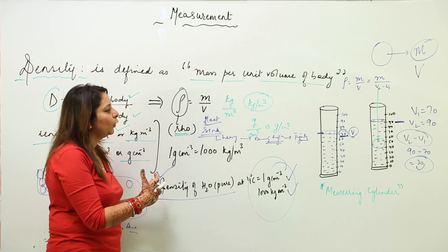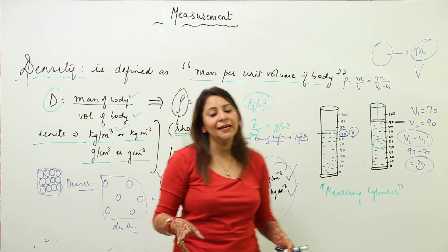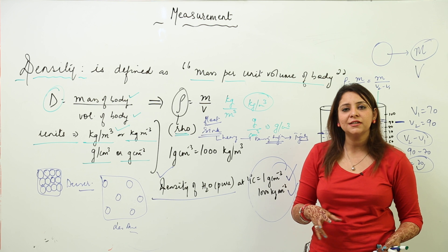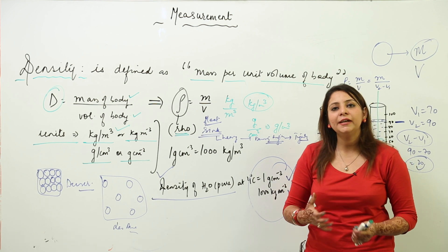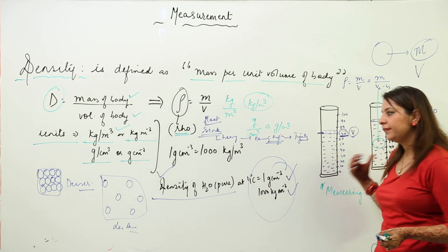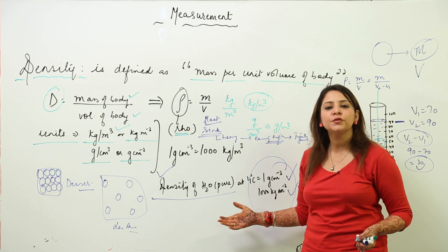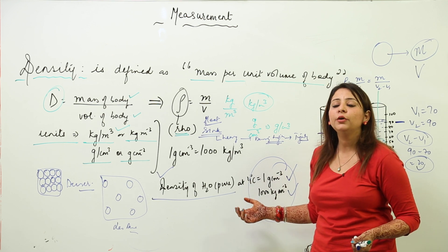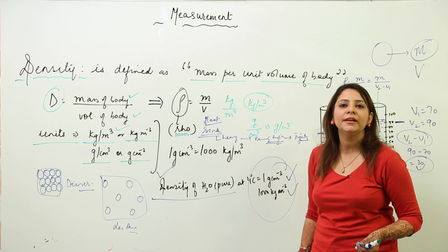This is how we determine the density of any substance. Floating or sinking of any substance into another is simply depending upon the density. This is how you measure density using a measuring cylinder, and these are the units you need to remember. Now we are going to take a few numericals based on density, and then we'll be taking up relative density.